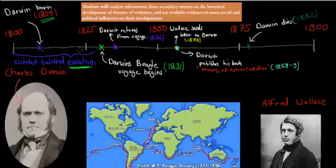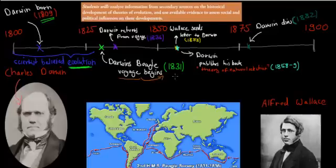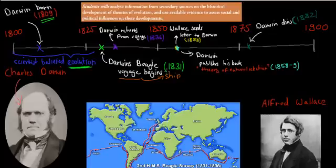So instead he went on a voyage — a ship trip. The ship was called the Beagle, and he went on a five-year voyage starting in 1831. The trip started in England and he went down to South America, then up the coast from South America.